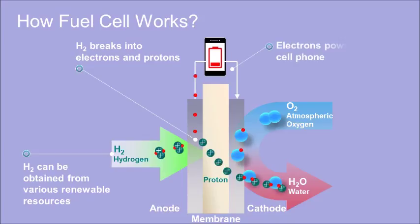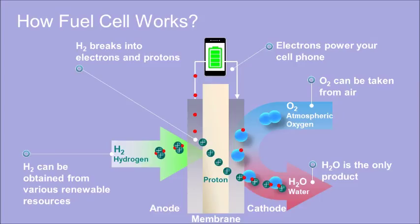When hydrogen enters fuel cells, it breaks into protons and electrons. Electrons can be used to power your cell phone, your car, your house, and water is the only product.